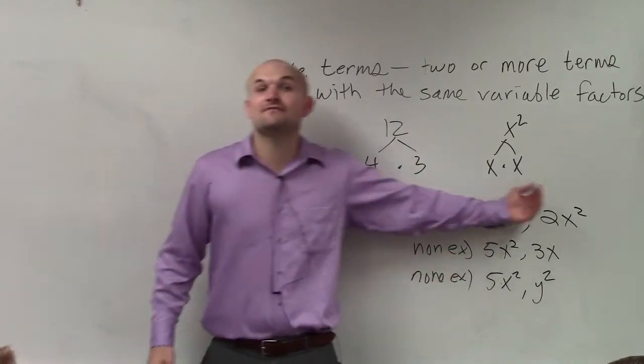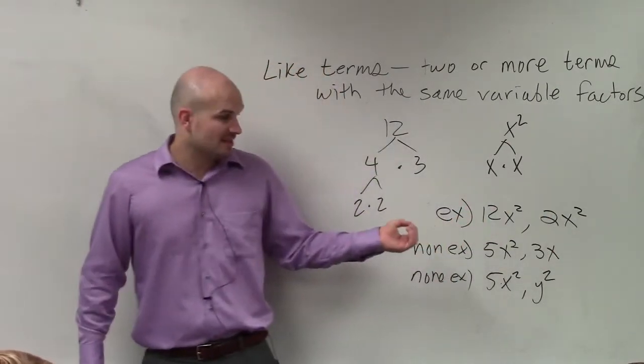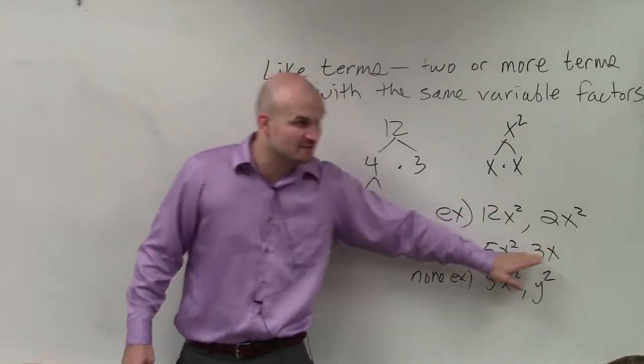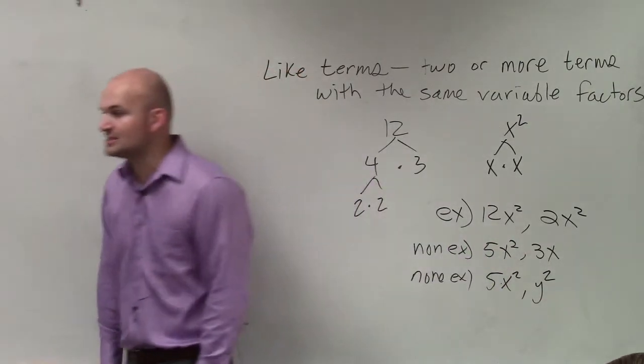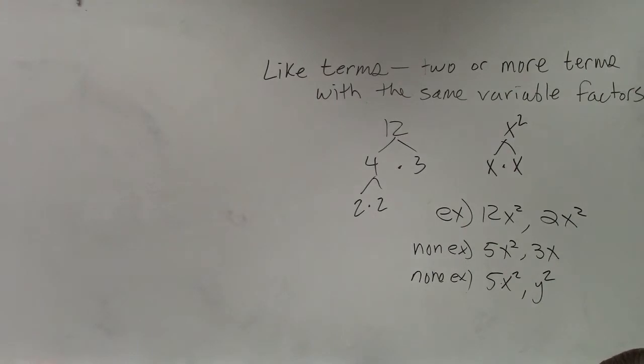If you have an x to the fifth, you have to have another x to the fifth for them to be like terms. If they have different variable factors, they're not like terms. And obviously, if they have different variables altogether, they're not like terms. Make sense? Very basic, but a lot of students